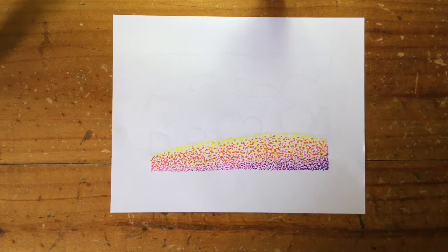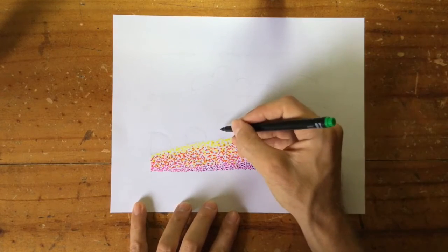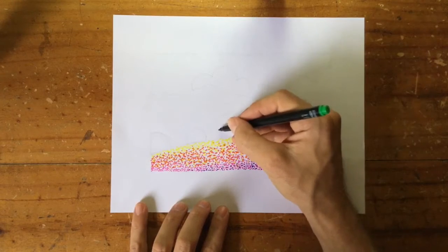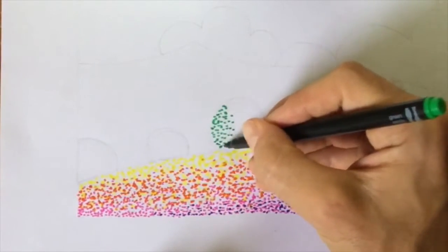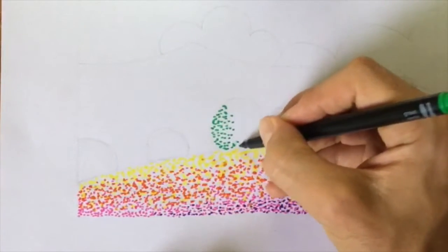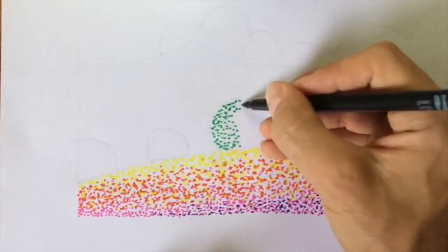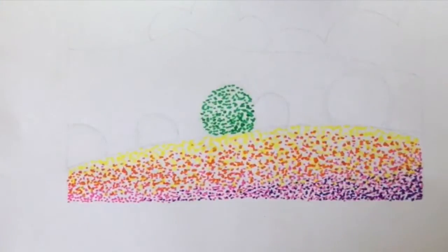So moving next onto these round bushes, each one is going to have a pretty much even coverage of green. So it should be not too compact, not too spaced out, and pretty much the same all the way across the bush.